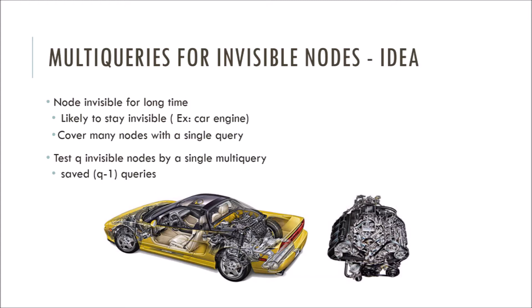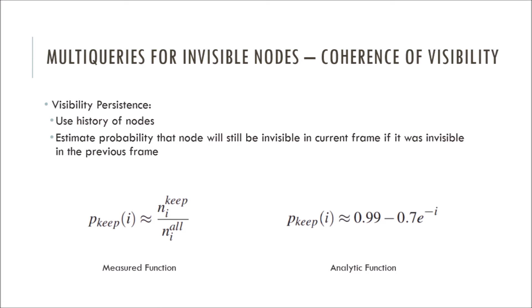Instead of querying each car engine, we simply query one time for all the car engines. So if we had ten cars, we only multi-query one time, saving nine individual queries. But how about for dynamic scenes where we have objects moving in and out of the camera view, and we have multiple different types of objects? How do we estimate the optimal number of invisible nodes to add into a single multi-query?